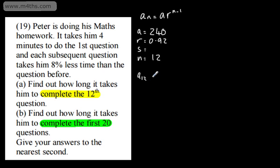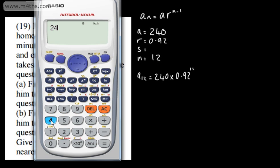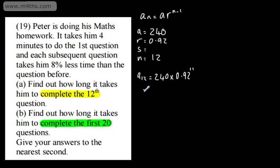So we can simply plug this in. A sub 12 is equal to 240 multiplied by 0.92 to the power of 11. Remember, it's n minus 1. So straight to the calculator with this, 240 multiplied by 0.92 to the power of 11. This will give me my answer in seconds. So that's 95.912 and so on.